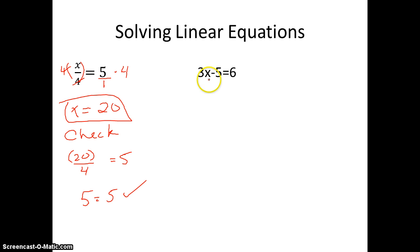A couple of multi-step problems here. 3x minus 5 equals 6. I do not have any denominators. I do not have any grouping symbols. So I need to get rid of any adding or subtracting that is happening. 3x equals 11. And then get rid of our 3 times by dividing both sides by 3.